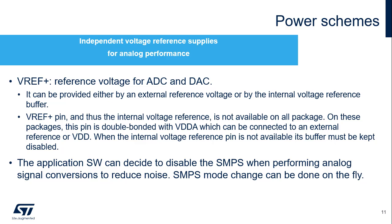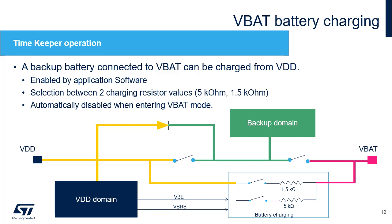The voltage reference is provided through the VDDA pin in packages where VREF plus is unavailable. The application software can decide to disable the SMPS when performing ADC or DAC conversion to reduce noise; in that case, the application can also disable the radio subsystem during conversion. The battery charging feature allows charging of a super cap connected to the VBAT pin through an internal resistor when VDD supply is present. Charging is enabled by software through either a 5 kΩ or 1.5 kΩ resistor, and battery charging is automatically disabled in VBAT mode.